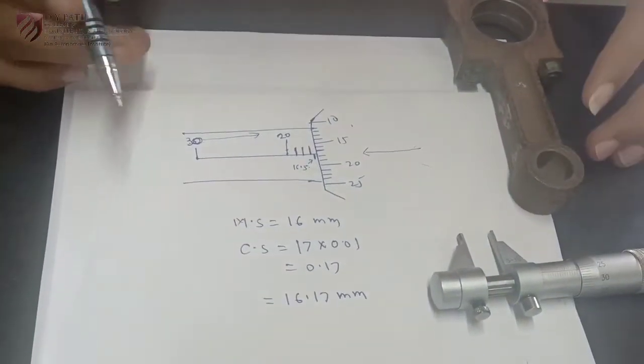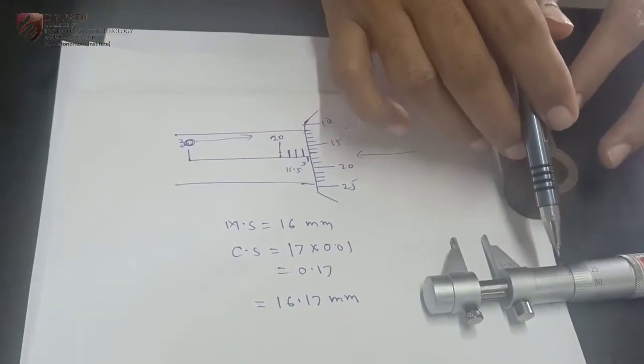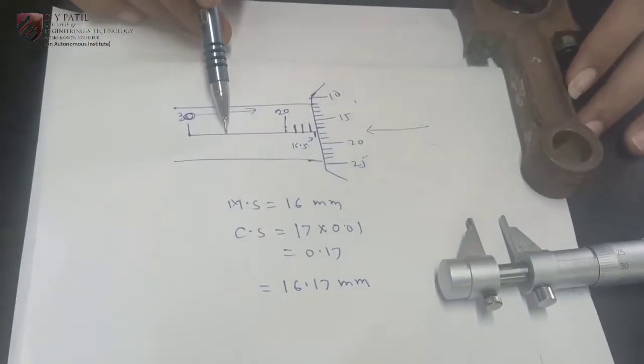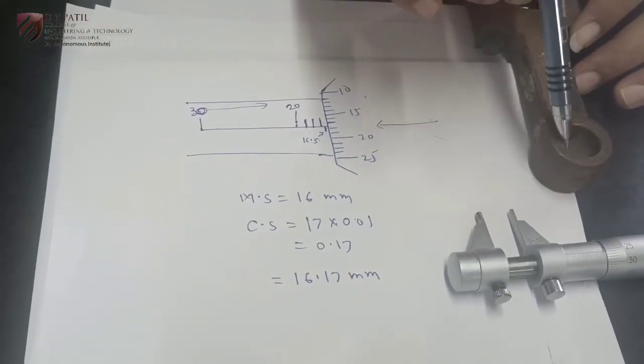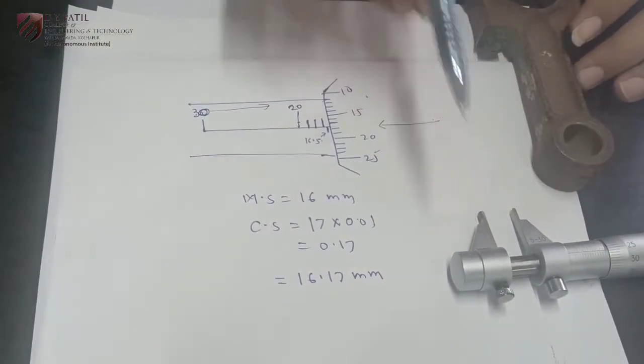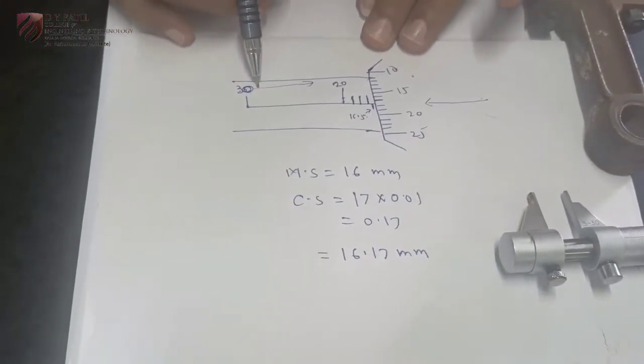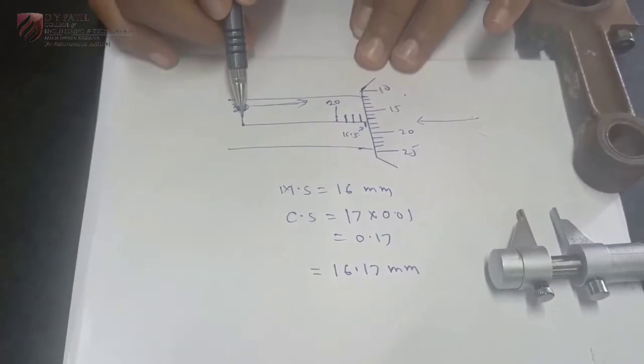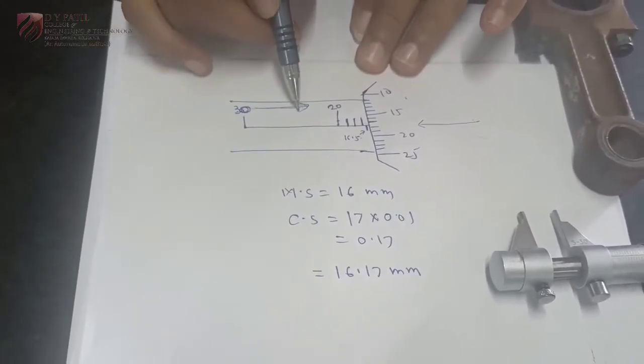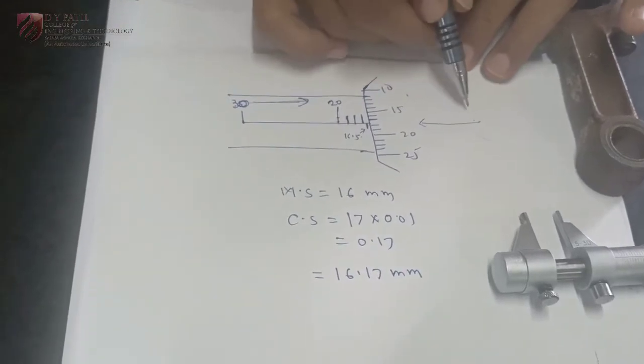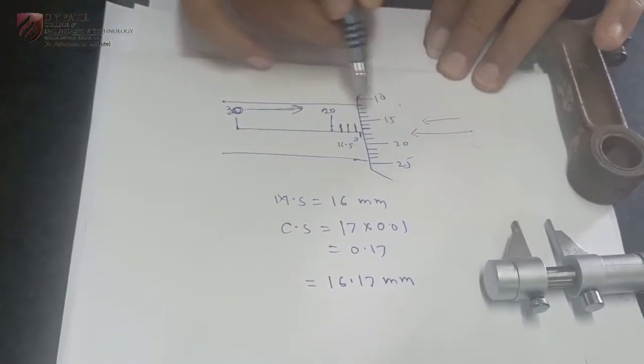For better understanding I have drawn the sketch of this particular reading on a page. We have measured this internal diameter by using these two jaws. The graduations are provided exactly opposite way to that of outside micrometer. So 30 is here, in this way the graduation will go on decreasing. Actually the graduation starts from this side, so 5 onwards.